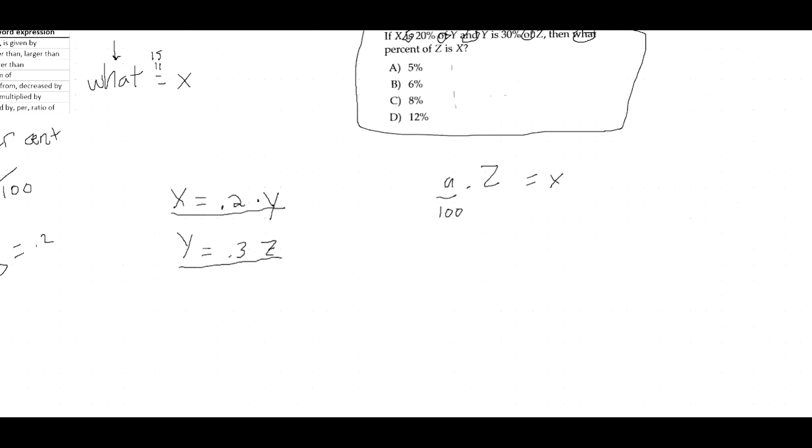So now I'm going to go ahead and solve this equation in terms of y. So x equals 0.2 times y. So I divide by 0.2 to get y by itself. So x divided by 0.2 equals y. And now what I'm going to do for this equation is do the same thing. Let it equal y. And fortunately enough, it's already equal. So y equals 0.3z. So now I'm going to substitute this y for this y. So this y is going to be equal to 0.3z.